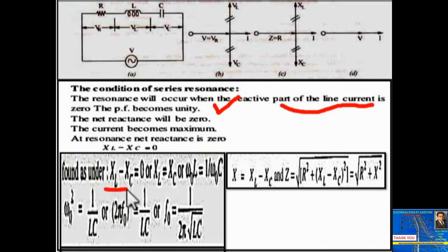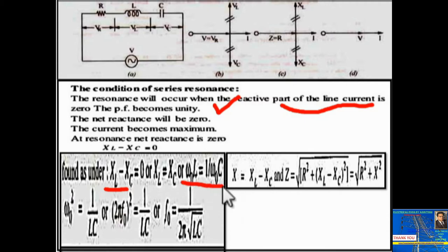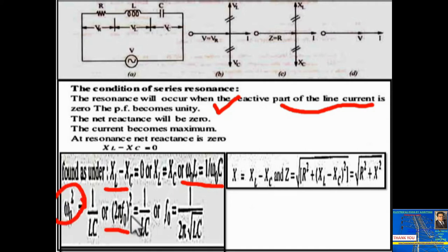XL equals XC. XL is inductive reactance and XC is capacitive reactance. We can write ω₀L = 1/(ω₀C), so ω² = 1/(LC). Substituting ω = 2πF₀, we get (2πF₀)² = 1/(LC), therefore the resonant frequency F₀ = 1/(2π√(LC)).